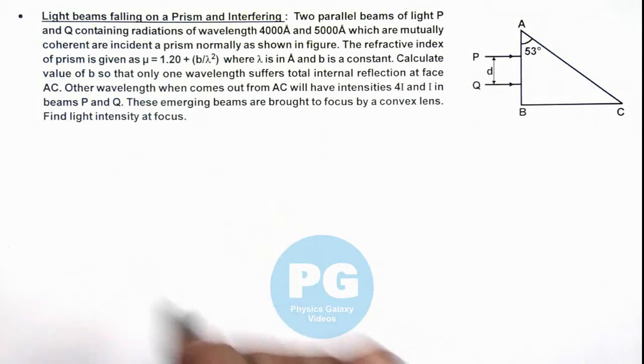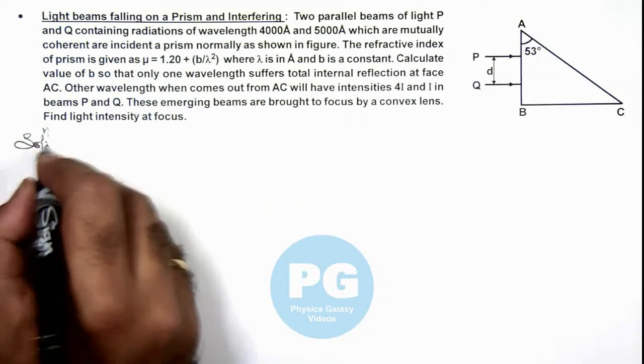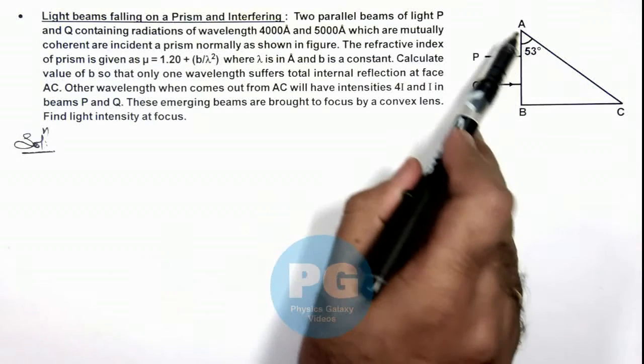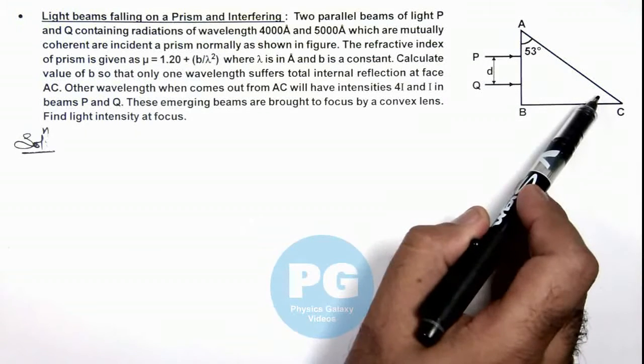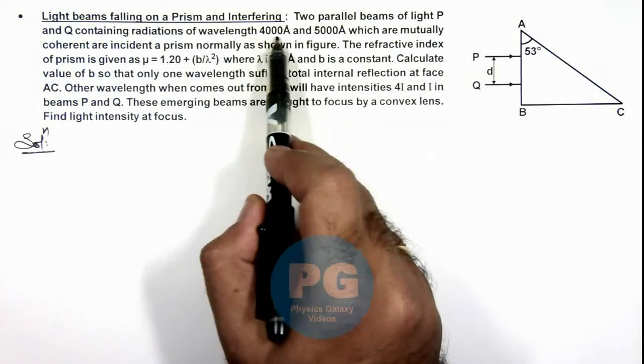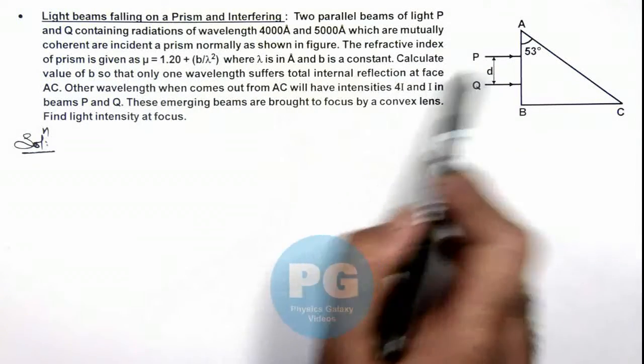Now, here in solution, we analyze and see for total internal reflection at face AC, it must be for the light of lower wavelength because for lower wavelength light the refractive index is higher.